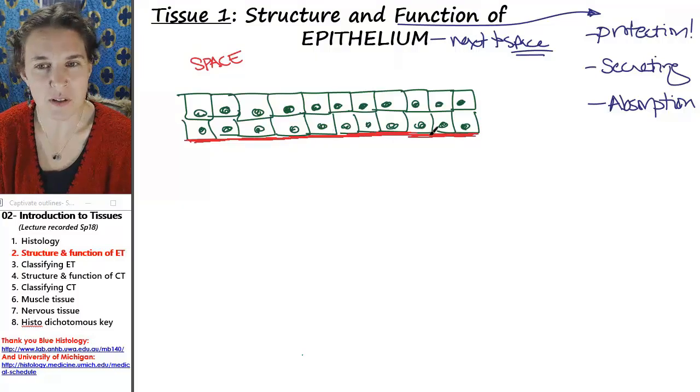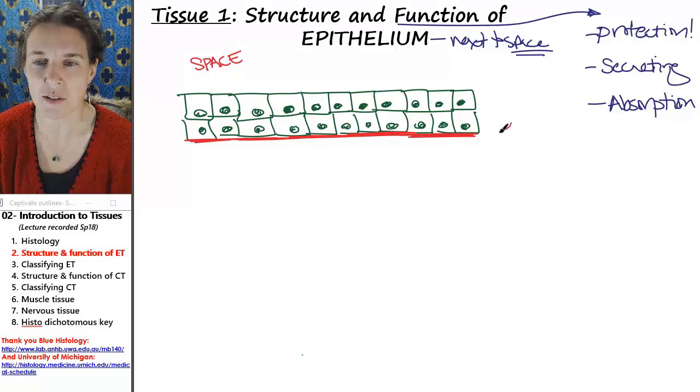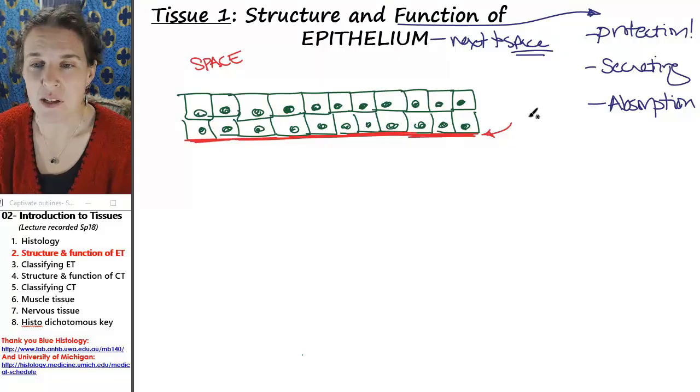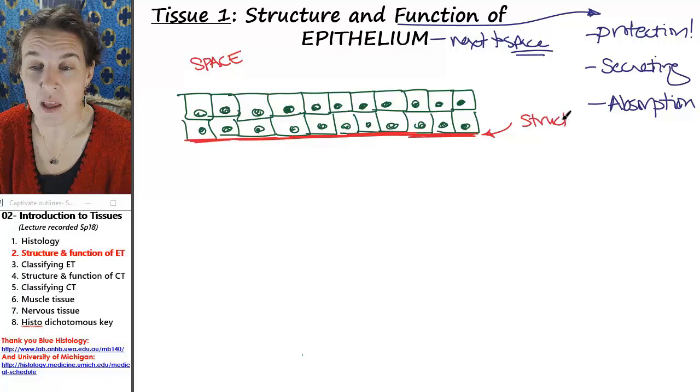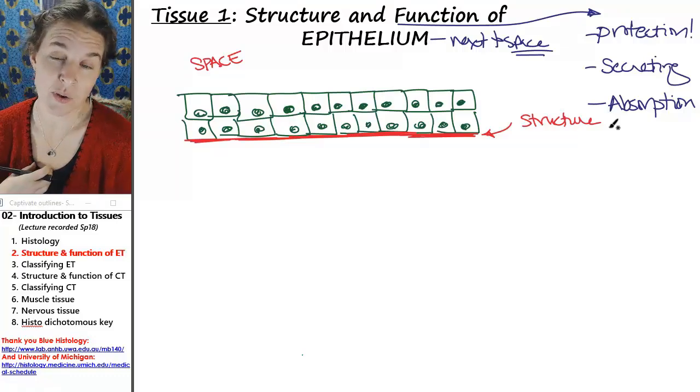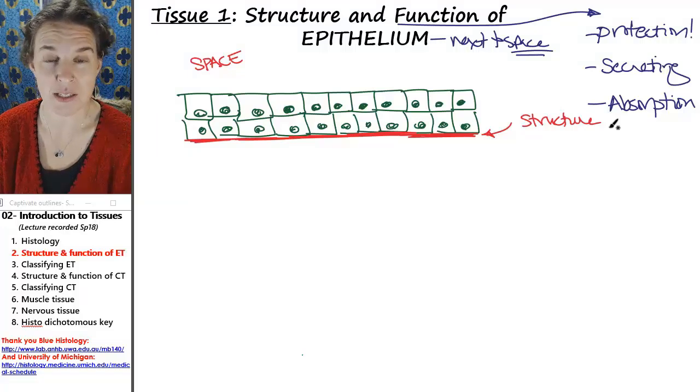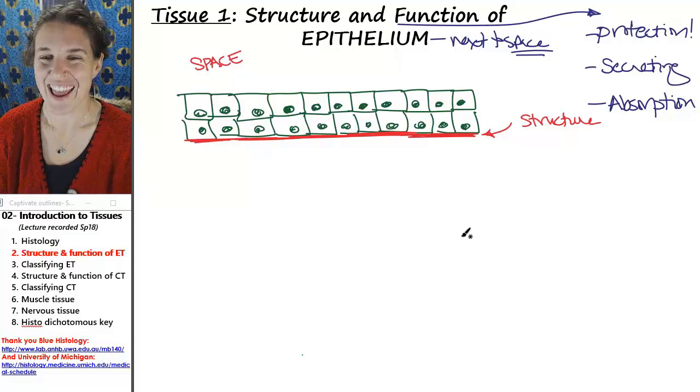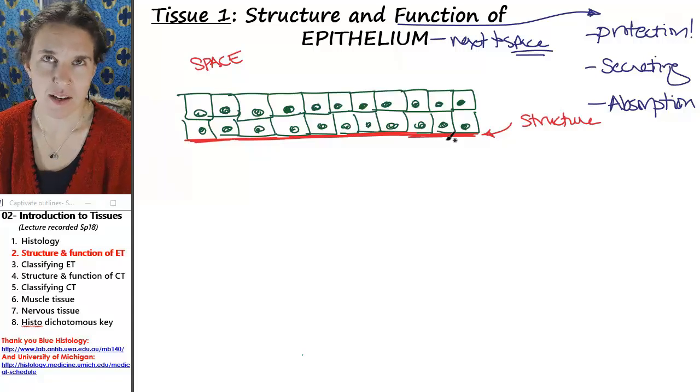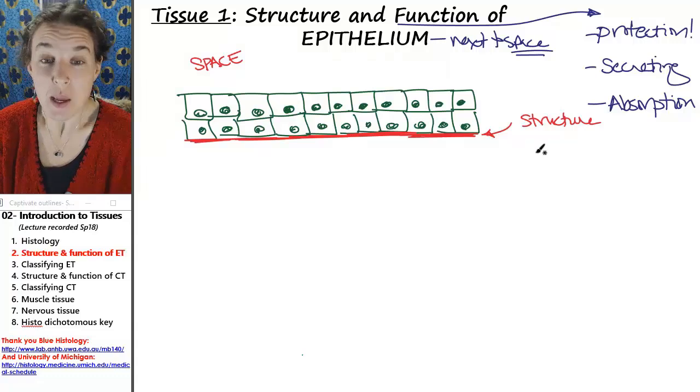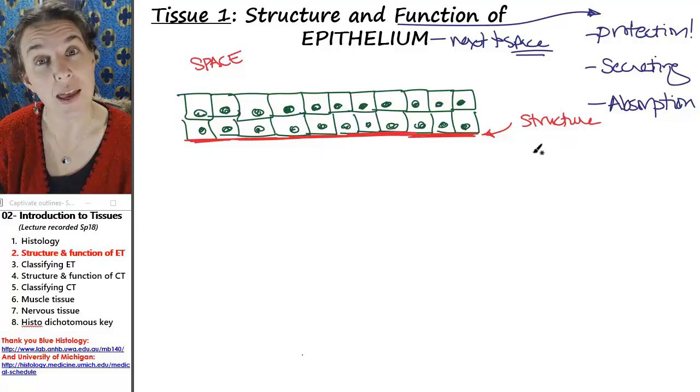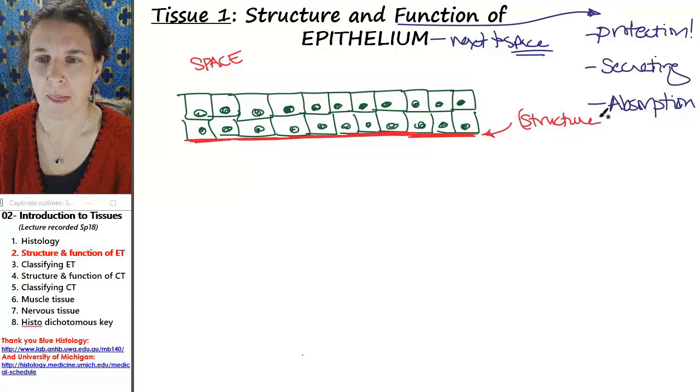I'm going to draw another structure that's really important that is associated with epithelial tissues. This is a structure that is associated with epithelial tissue. I'm going to jot down that it's a structure just so you know that that's how I would ask you about it. I could point to this structure on an exam or quiz and ask you, name this structure. It's called the basement membrane.